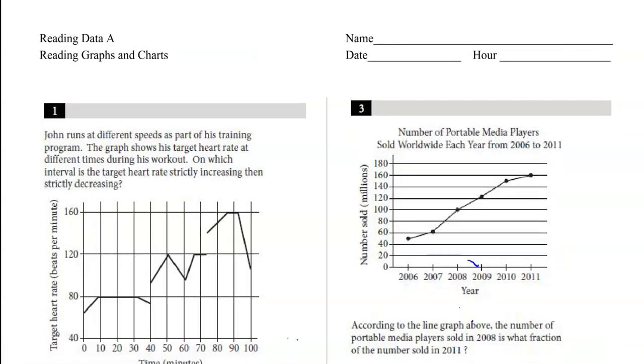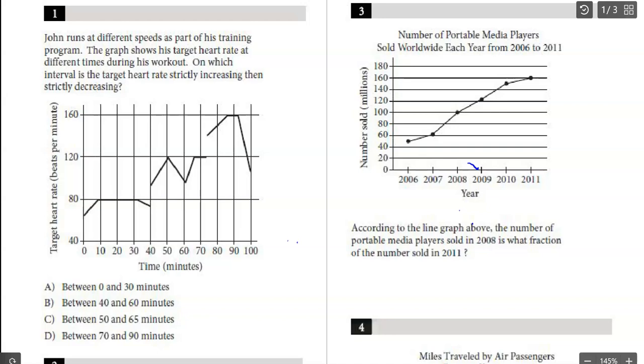All right, reading data part A, starting right off with number one. John runs at different speeds as part of his training program. The graph shows his target heart rate at different times during the workout. Which interval is the target heart rate strictly increasing then strictly decreasing? His heart rate is over here on the left. Looking at the graph, it looks like we have strictly increasing, strictly decreasing right there between 40 and 60. So the correct answer here is B.